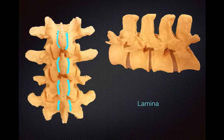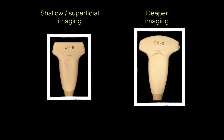Just at the base of the spinous processes are the lamina, shown in light blue. In using ultrasound to image the spine, you can use either the linear transducer or the curvilinear transducer. I tend to favor using the curvilinear, primarily because by the time I need an ultrasound to actually image the spinous processes, it tends to be in patients whose spinous processes are deep and cannot be palpated. The curvilinear does tend to give you better imaging ability in the deeper structures, but the linear transducer could be very handy as well.